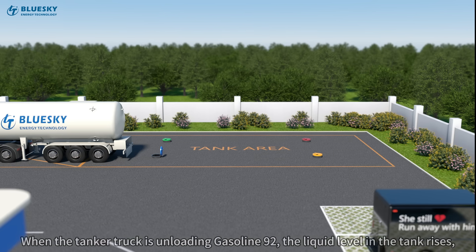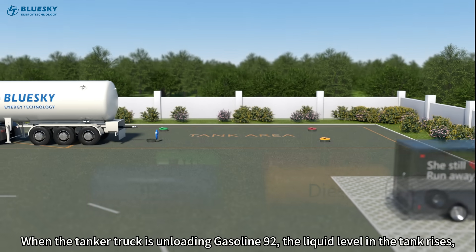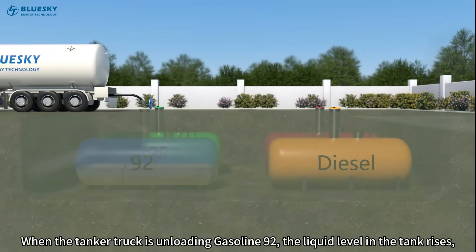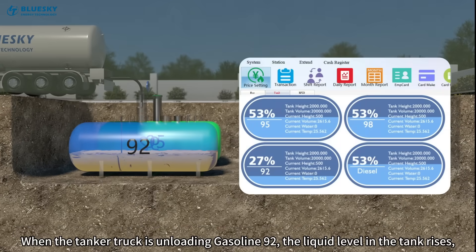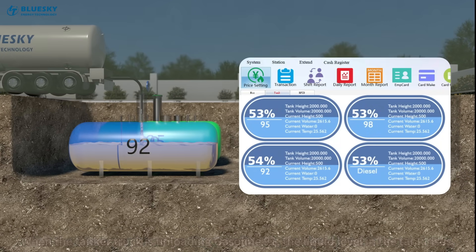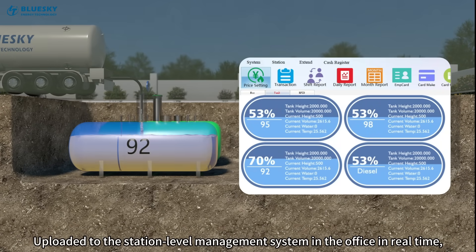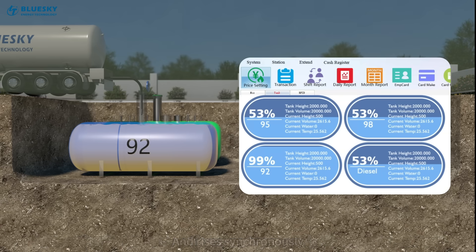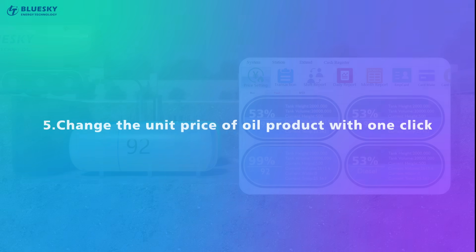When the tanker truck is unloading gasoline 92, the liquid level in the tank rises. This is uploaded to the station level management system in the office in real time, and rises synchronously on screen.